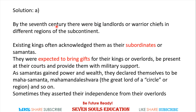This relates to the era of big landlords and warrior chiefs who held the status of Samantas. Kings acknowledged them as subordinates. They were expected to bring gifts for their kings and overlords, present at their court, and provide military support. But as Samantas accumulated wealth and power, they declared themselves Maha Samanta or Maha Mandalashvara and began ruling over their own kings.